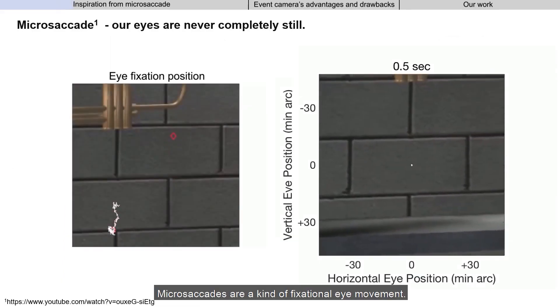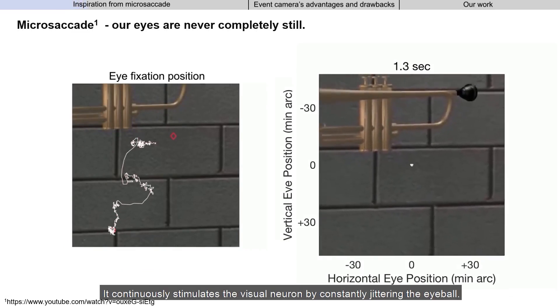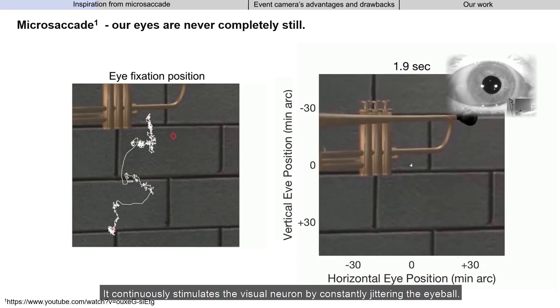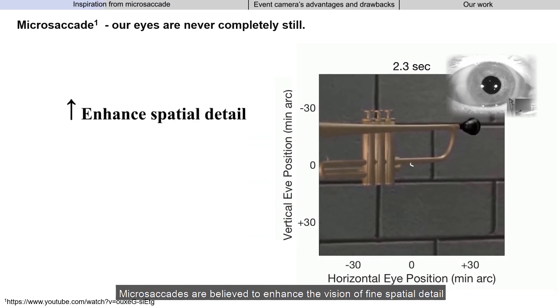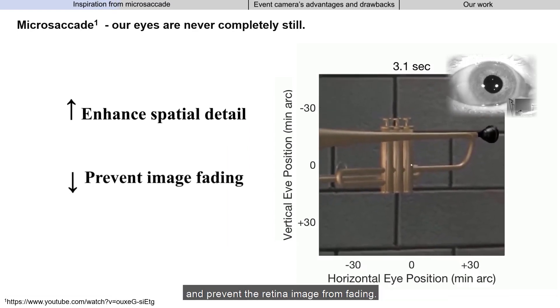Microsaccades are a kind of fixational eye movement. It continuously stimulates the visual neuron by constantly jittering the eyeball. Microsaccades are believed to enhance the vision of fine spatial detail and prevent the retina image from fading.